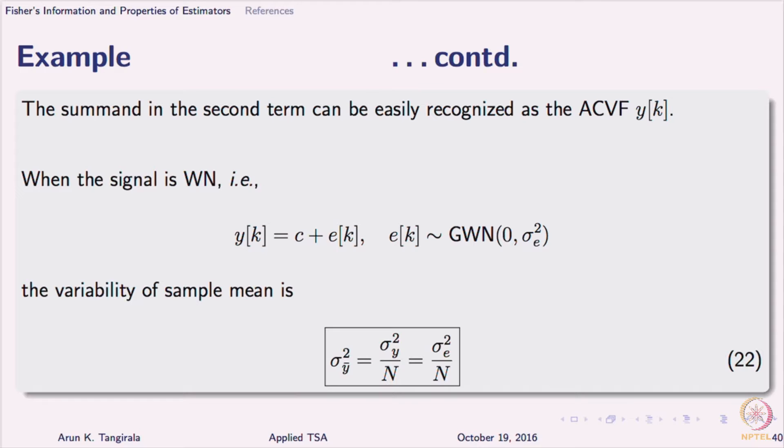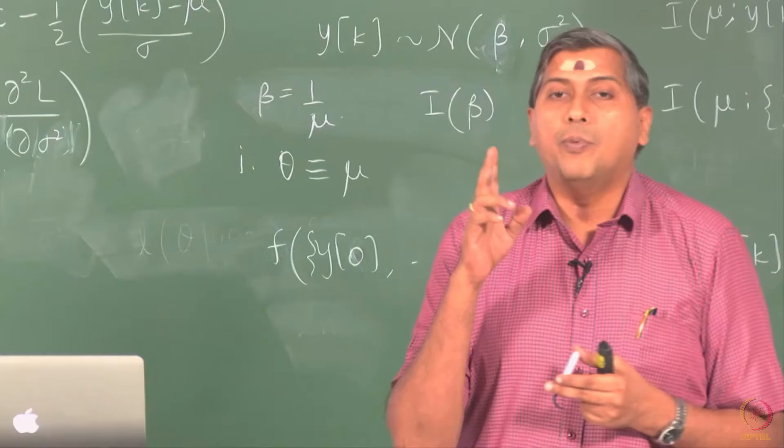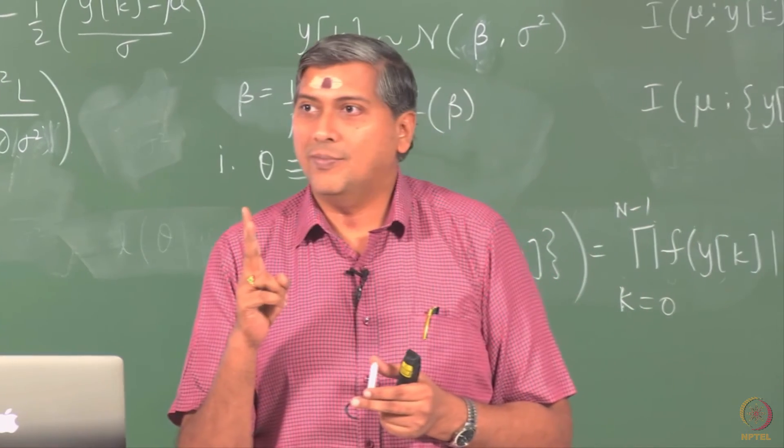Random sample would mean uncorrelated observations is σ²/n. So, the lesson that we learn from this expression is the variability in the sample mean, even though it is derived for a white noise process, is dependent on two things. What are those?